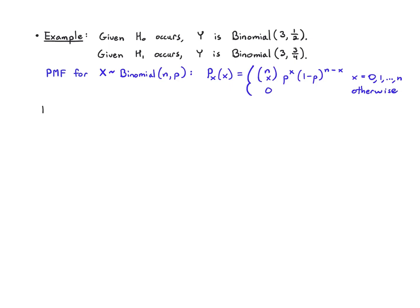In the H₀ conditional PMF, that means I'm going to plug in 3 for n and 1/2 for p, and I'm going to get a PMF from 0 to 3. I can expand this out term by term. I'm going to have 3 choose 0 times 1/8 when y equals 0, 3 choose 1 times 1/8 when y equals 1, 3 choose 2 times 1/8 when y equals 2, and finally 3 choose 3 times 1/8 when y equals 3.